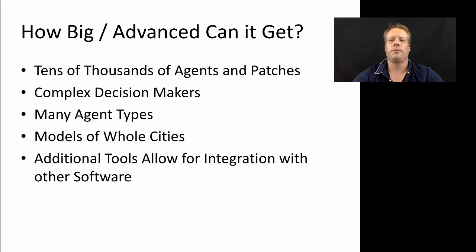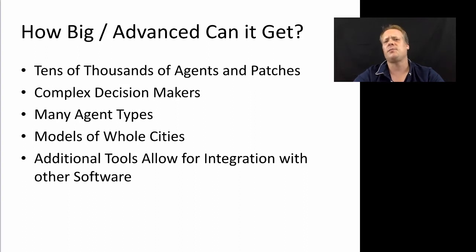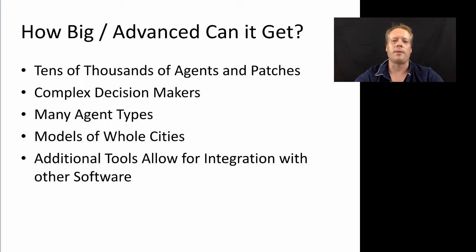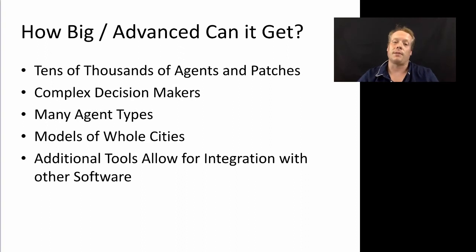We've gone through a few simple models to give you a flavor for some of the things that agent-based modeling has been used to explore in the past. In many of those contexts, ABM was used almost as a thought experiment to explore potential theories about the way the world works, or to understand how different parameters relate. But agent-based modeling can also be used to create very complex models. So one natural question might be: how big and advanced can it get?